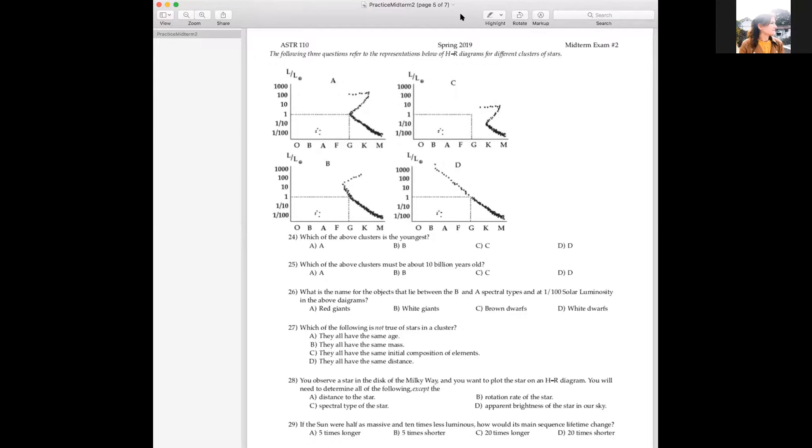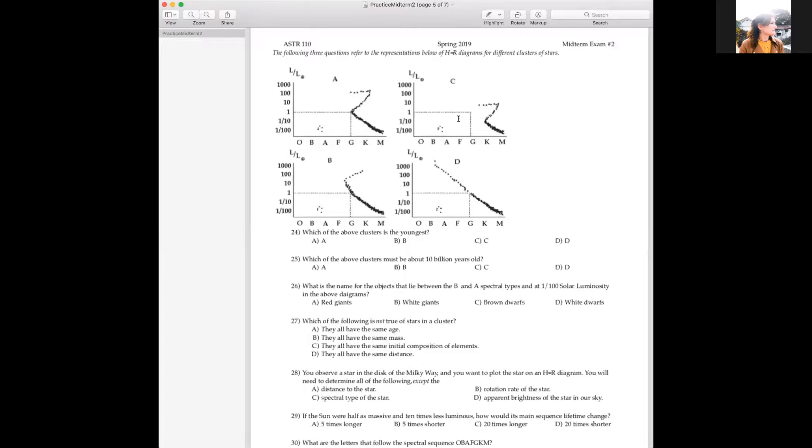So yes, if something is more luminous, it will have a larger number? Not in absolute magnitude. Absolute magnitude, the same as apparent magnitude in that it's backwards. But in luminosity units, yes, it will have a larger number. And it will be at the top. HR diagrams will always have the most luminous things at the top, no matter what the scale is on the left.